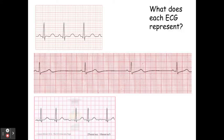In an exam you may be asked to identify which ECG represents which kind of heartbeat. Pause the video and have a go at identifying which is a slow heartbeat, which is irregular, and which is fast — and try to remember the correct scientific terminology to describe each one.